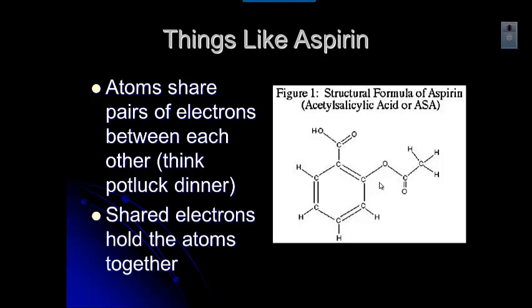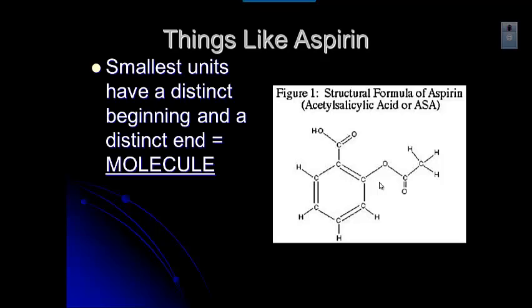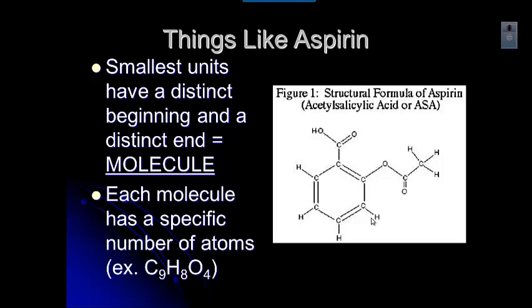The same thing happens with compounds like aspirin. Those shared pairs of electrons are what hold the atoms together — the attraction of the nucleus of the atom for both electrons in that shared pair pulls those two atoms together. They have a distinct beginning and a distinct end. Unlike ionic compounds like sodium chloride, which just seem to go on and on, this is what a molecule of aspirin looks like — a hexagonal ring with little chains hanging off it. We call that a molecule, and when we're talking about a molecule, we're usually talking about a covalent compound.